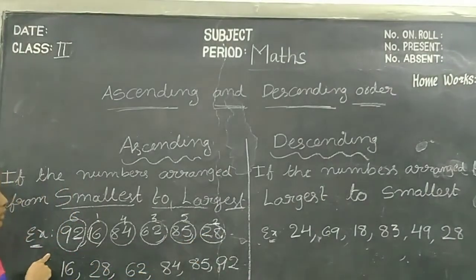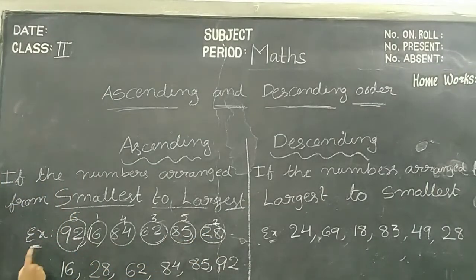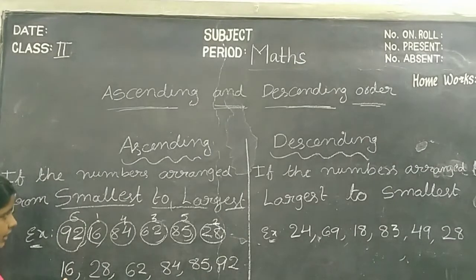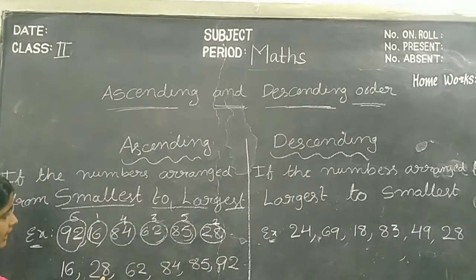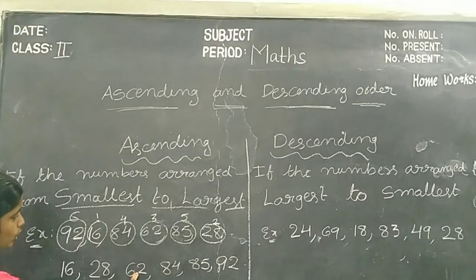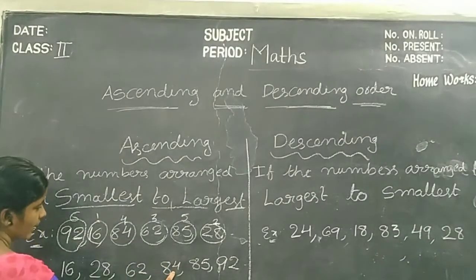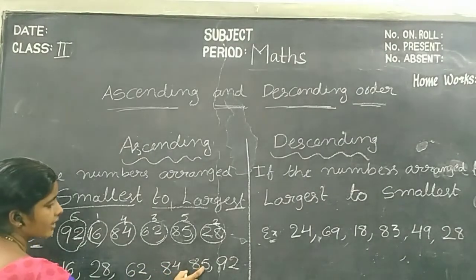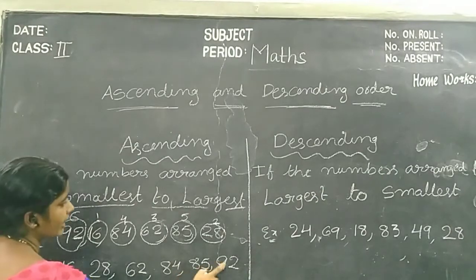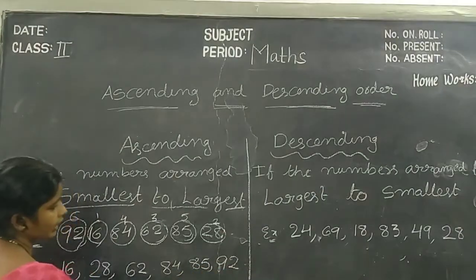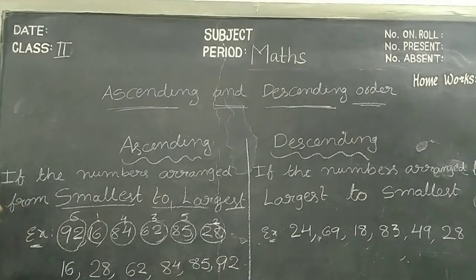In this example, what is the smallest number? 16. Next number is 28. Next number is 62. Next number is 84. Next number is 85. Next number is 92. This is called Ascending Order.